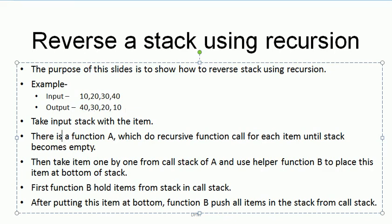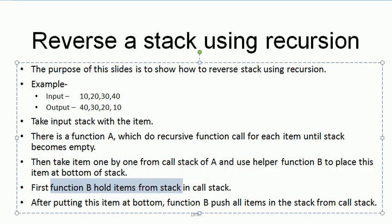So I have created two functions, Function A and Function B, to reverse the stack. What I do is take all items from the stack one by one and pass that item to Function B. Function B holds all items from the top of the stack and places the item at the bottom of the stack. This is the overall approach, and I will explain each one by one.